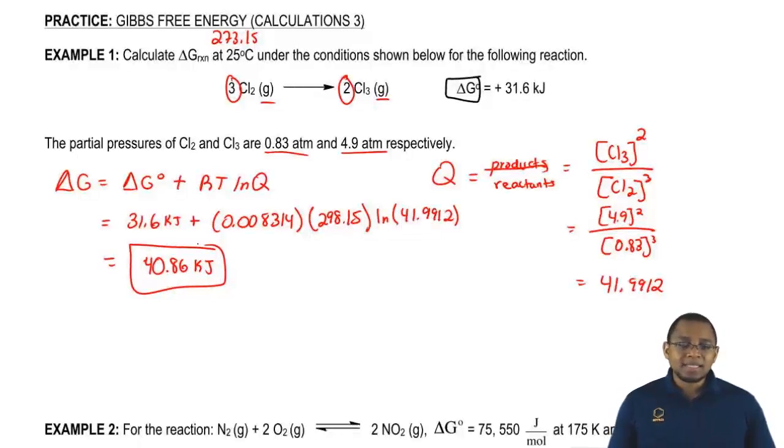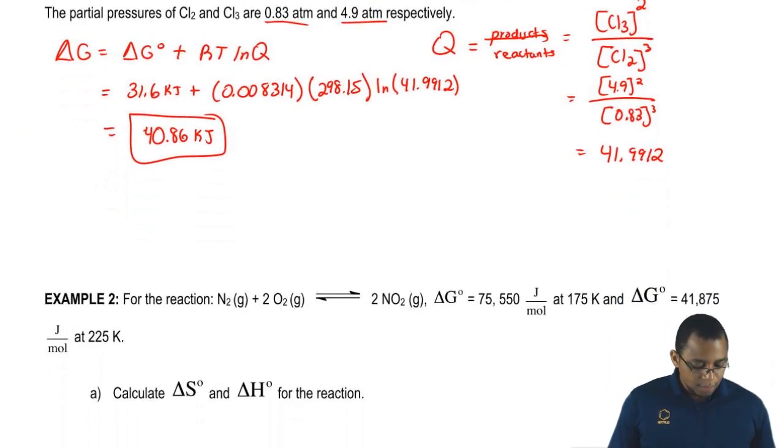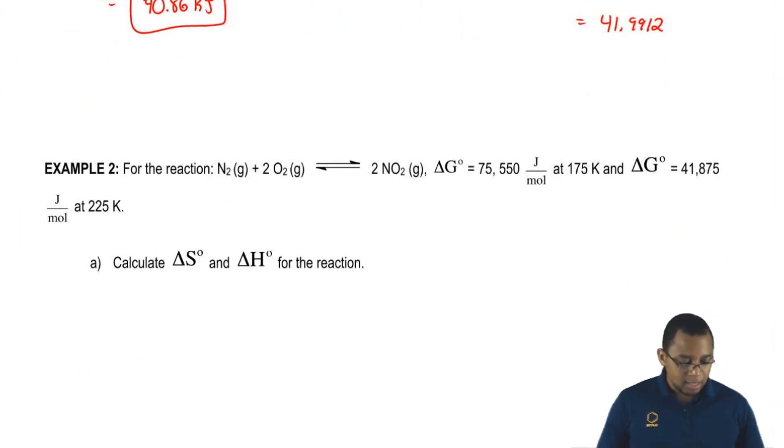Now that we've seen example 1, let's take a look at example 2. For example 2, we're saying for the reaction N2 plus O2 giving us 2NO2 gas.